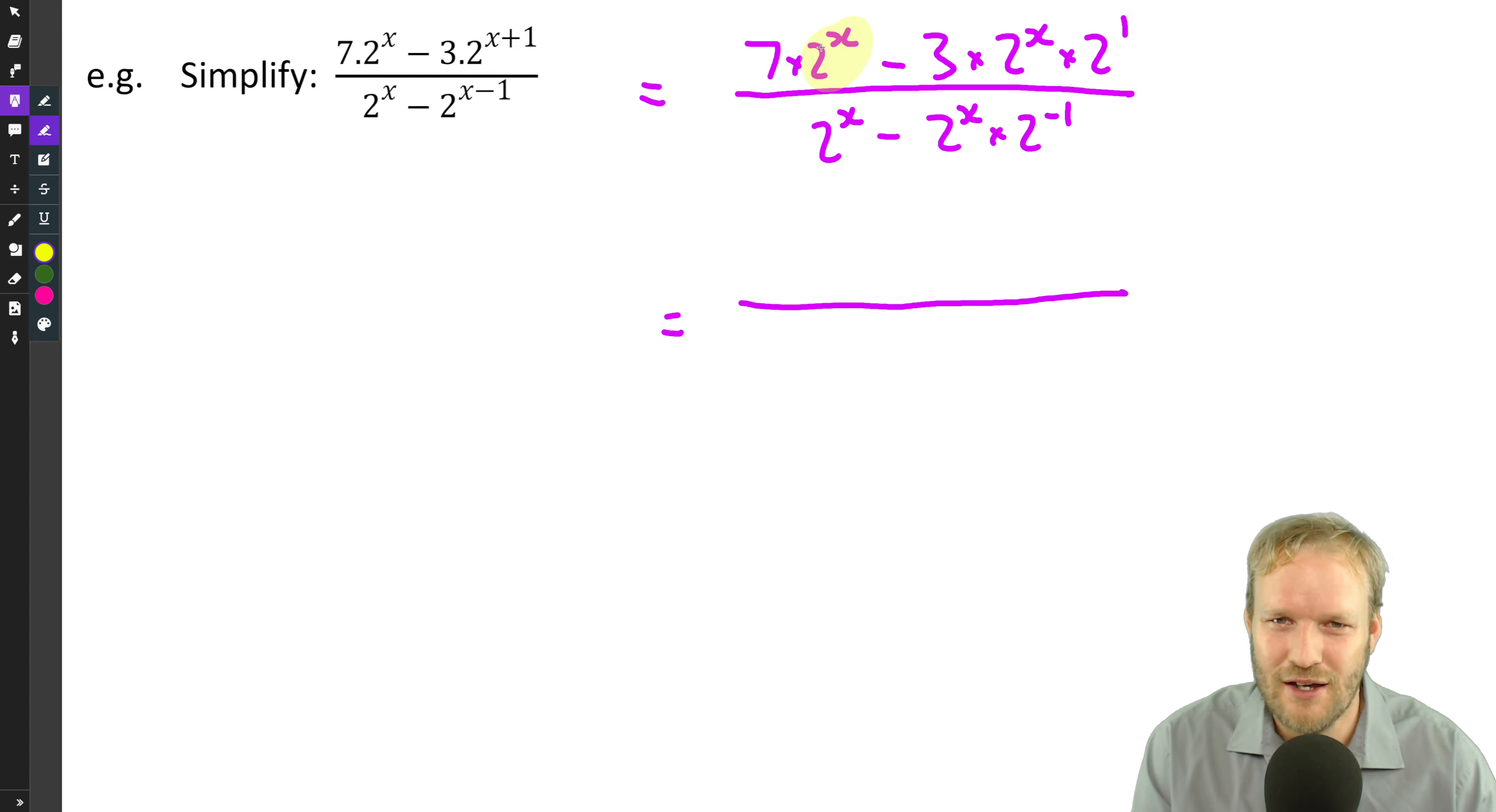In the numerator, I see a two to the x in that term and a two to the x in that term, which means we can take it out as a common factor. So writing in the brackets is easy. It must be two terms. We've still got a seven over there minus three times two to the one.